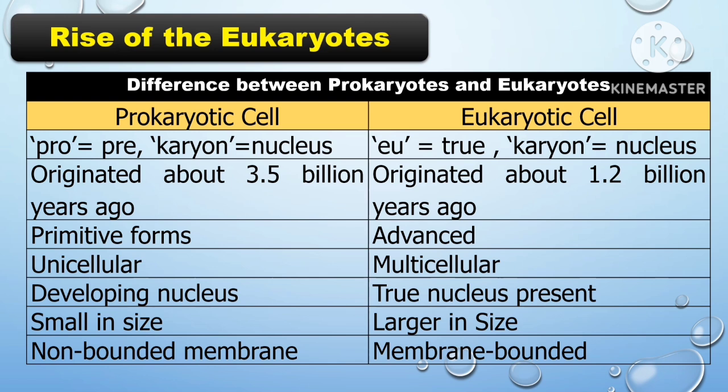For the prokaryotic cell — 'karion' means nucleus — it is originated about 3.5 billion years ago. It is of primitive forms, has unicellular structure, developing nucleus, small in size, and non-bounded membrane.